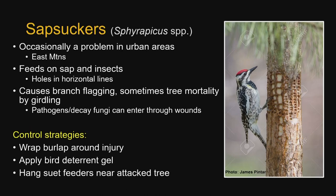Sap suckers are a big one — I got a lot of calls on this, especially in the East Mountains. They feed on sap and insects, creating holes in horizontal or vertical lines, causing branch flagging and sometimes tree mortality by girdling. If the sap sucker is feeding all the way around the tree, it may girdle the whole tree and over a couple of years the whole tree might die. Control strategies: wrap the injury in burlap — this is the best thing I've found when dealing with homeowners. Very low cost, very easy to do. There's also a bird deterrent gel, similar to Vaseline, but more expensive. You can also hang suet feeders near attacked trees.